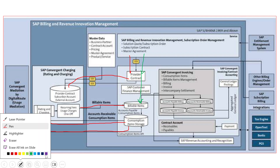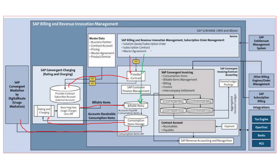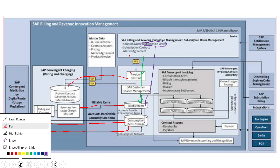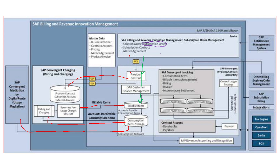Now let's use purple ink to denote our one-time case. In the one-time event-based model, or one-time charge model, as soon as the subscription order gets created, a subscription contract itself will not get created. From the subscription order itself, directly without even creating any subscription contract, a billable item will get created.